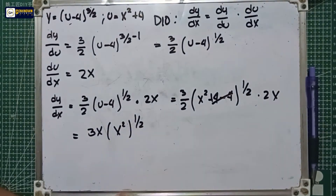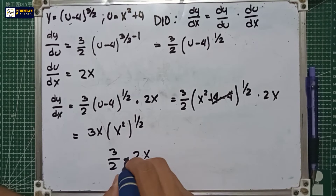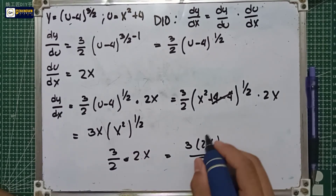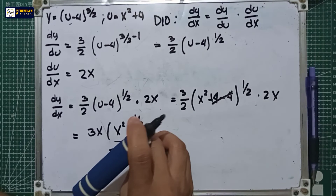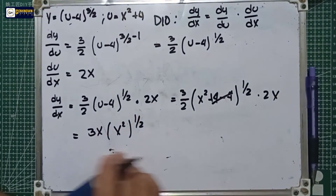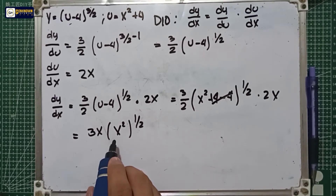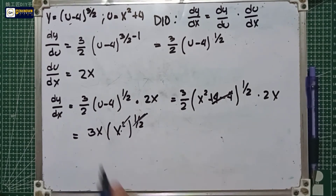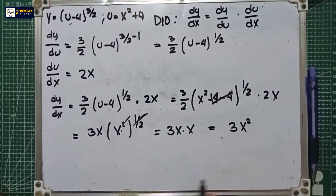So we have 3 over 2 multiplied by 2x, which gives us 3 times 2x over 2. The 2s cancel, giving us 3x. Then x squared raised to 1 over 2 simplifies to x, so we have 3x multiplied by x, which equals 3x squared. That is the final answer for number 3.